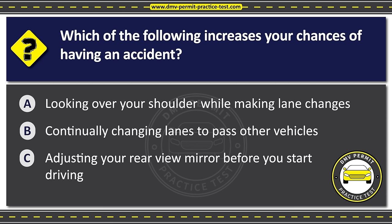Question twenty-one. Which of the following will help you to avoid being hit from behind? Option A: Signaling at least 100 feet before turning. Option B: Decreasing your following distance. Option C: Changing lanes frequently. The correct answer is Option A: Signaling at least 100 feet before turning.